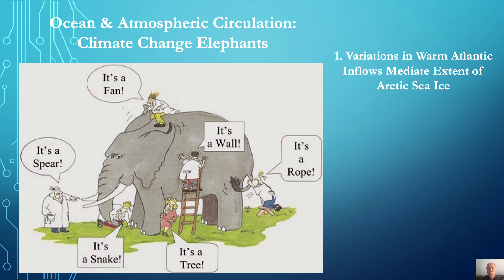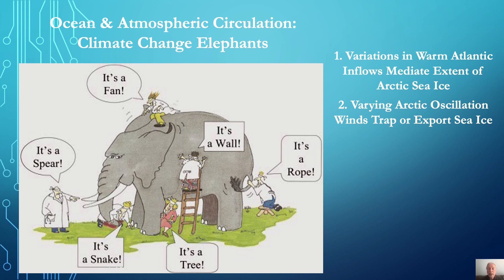So to summarize, presently warm Atlantic inflows mediate sea ice extent and maintain the warm subsurface Atlantic water layer. The release of heat from the subsurface is largely mediated by sea ice thickness. The varying winds driven by the Arctic oscillation can either trap and grow thick ice or remove thick ice. Combined, those two dynamics have reduced sea ice extent in recent decades, allowing more subsurface heat to ventilate.